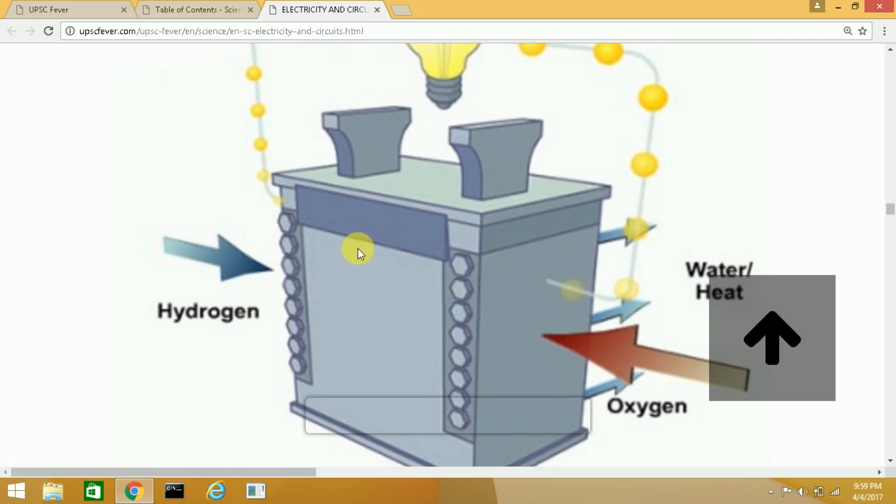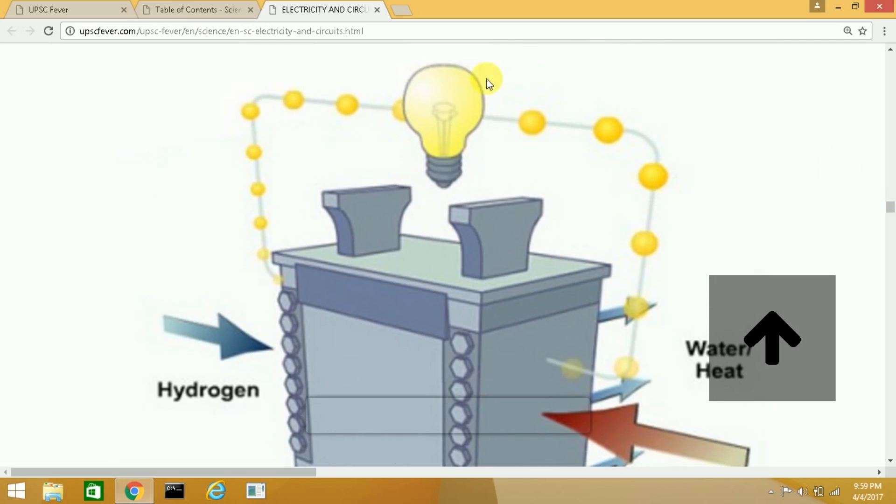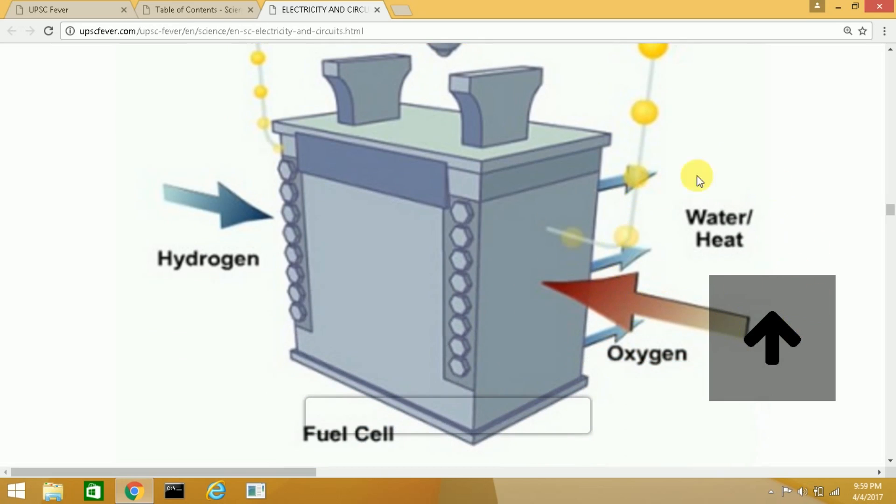A fuel cell produces direct current and you can see that this direct current is used to light this light bulb, and water and heat are the things that are released as byproducts of this fuel cell reaction.